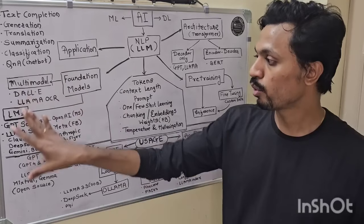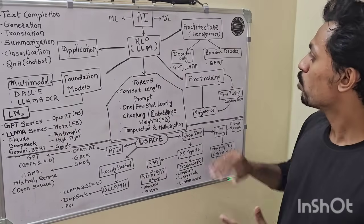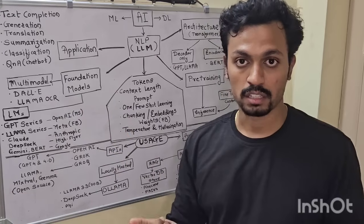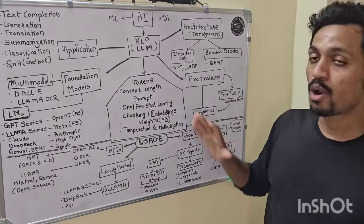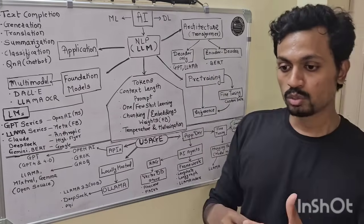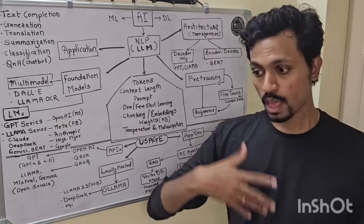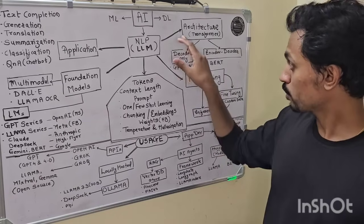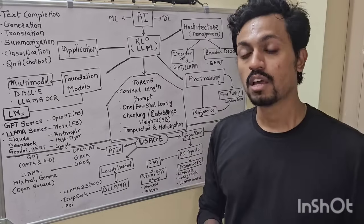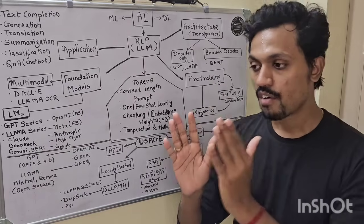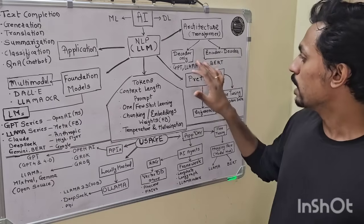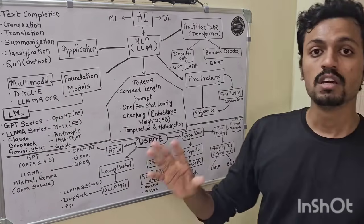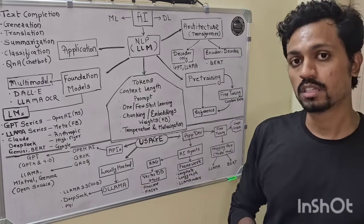All these models are supported by companies. Now let's talk about architecture. To build a model, you use a formula or a base. All these models are built upon transformer architecture, proposed by Google around 2016-2017. There are two types: decoder-only models and encoder-decoder models. Most models like GPT and Llama use decoder-only. BERT uses encoder-decoder architecture.